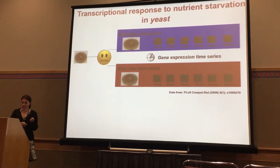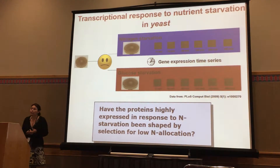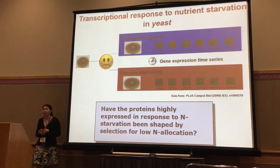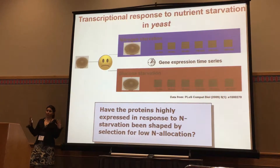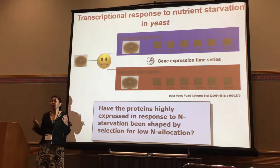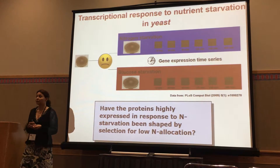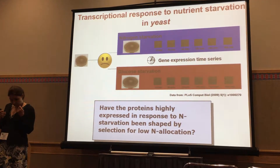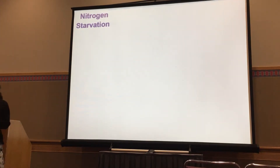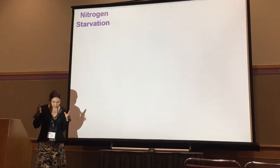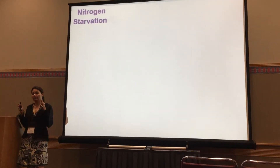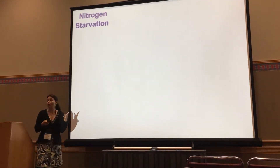What we wanted to ask is whether the proteins that are highly expressed in response to nitrogen starvation have been shaped by selection for low nitrogen allocation. You are in a setting where nitrogen is limiting, and you've been experiencing this for a really long time because it is a recurrent limitation in natural environments. Did natural selection see that? Did it integrate this information in the composition of genes and proteins?